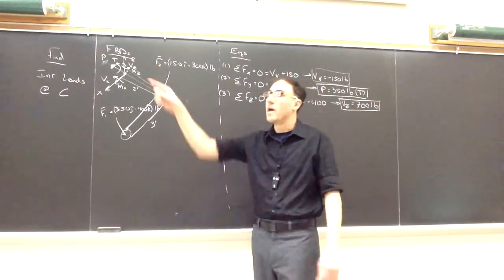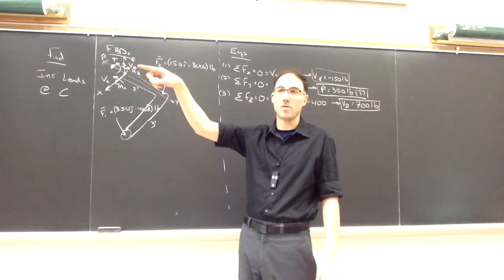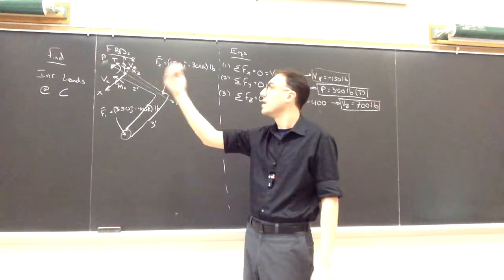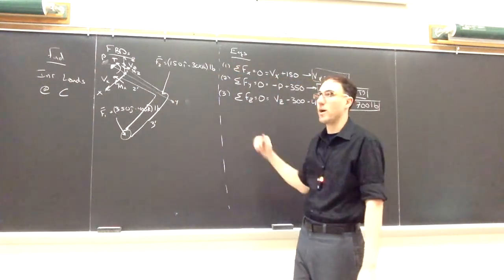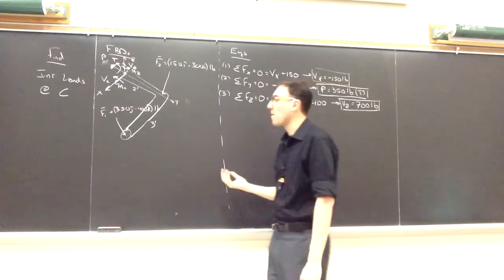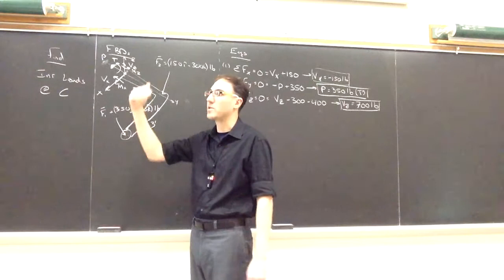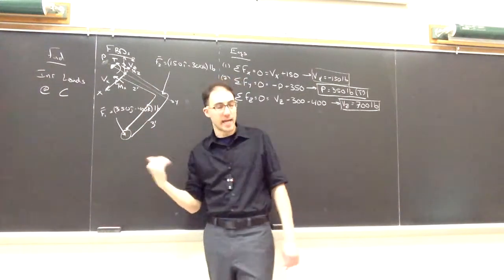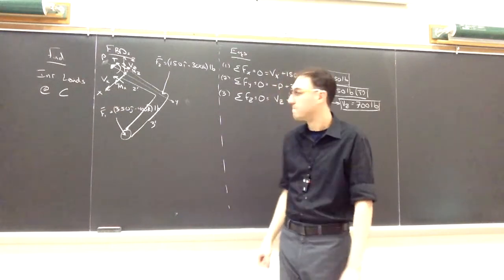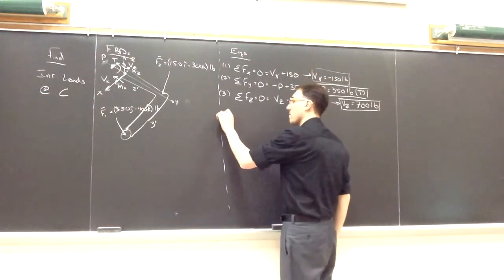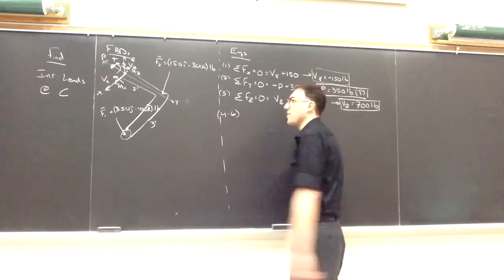Now, in general, though, if we did have to first start with the external reactions and solve those, we have to do those six equations first. Then we come and we can draw these six equations. We were able to short-circuit that a little bit because we could make a cut and take a side of it that did not include any of our external forces in this example.